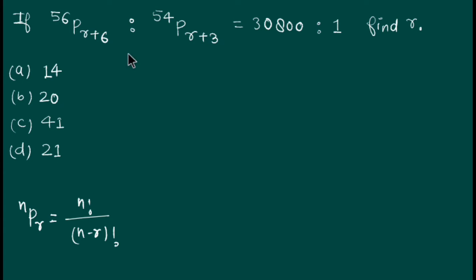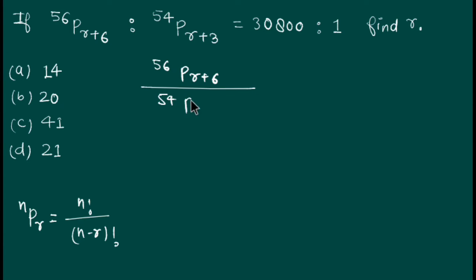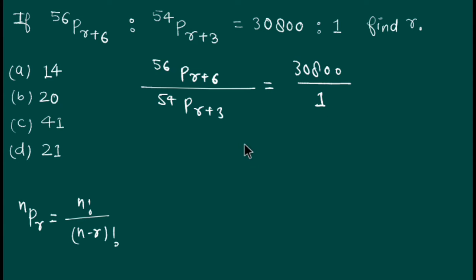Since this is a ratio, I can write it as a fraction: 56Pr+6 divided by 54Pr+3 equals 30800 divided by 1. Now we apply the permutation formula to the expression 56Pr+6.